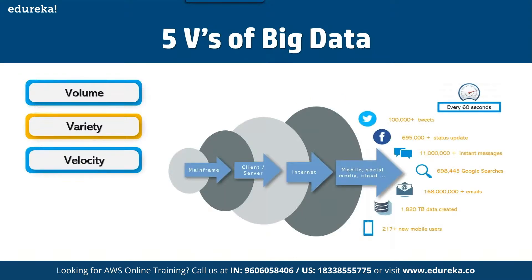Next is Velocity. There are special cases where we need data in real time — we can't even expect a delay of a single second. For example, in every 60 seconds we have more than 100,000 plus tweets being generated, and 1,800 TB of data being stored. We need a solution that is very fast — the moment you request it, data is stored, updated, and the result is presented to you.